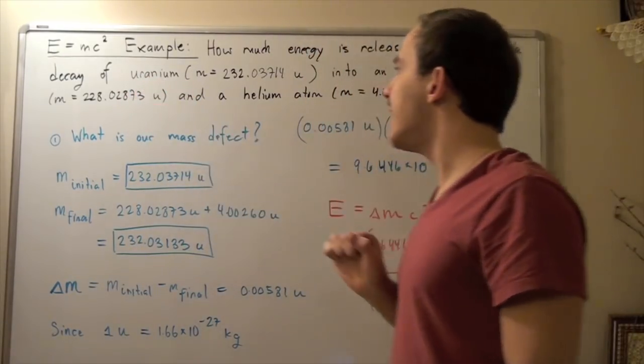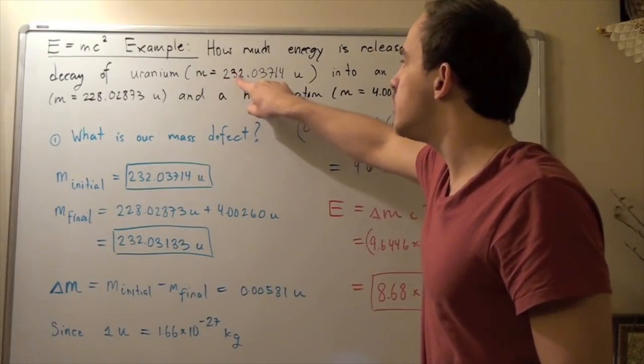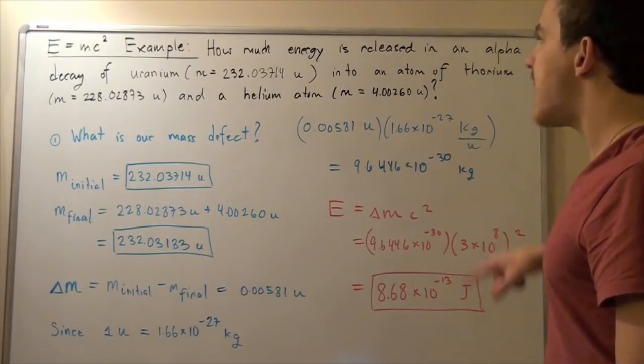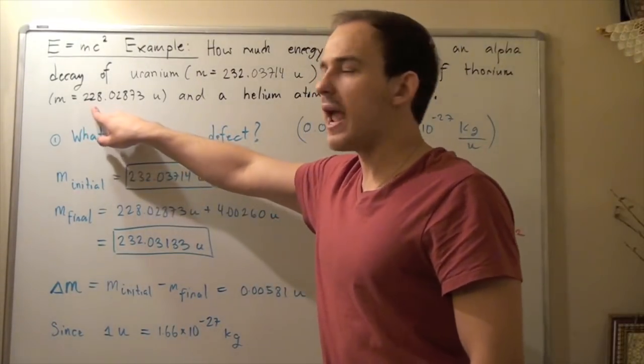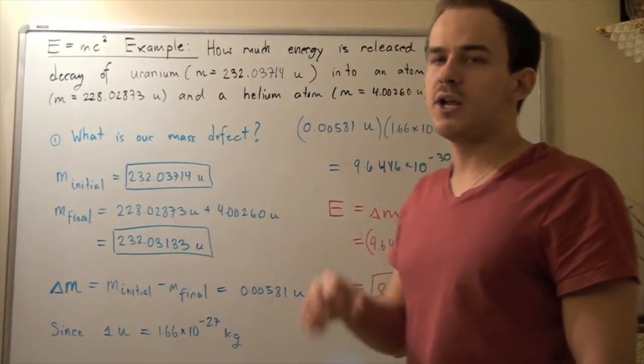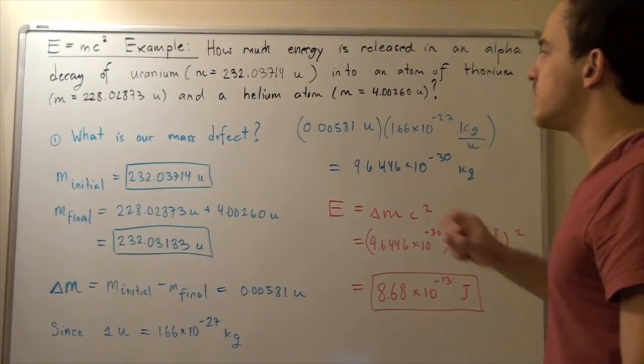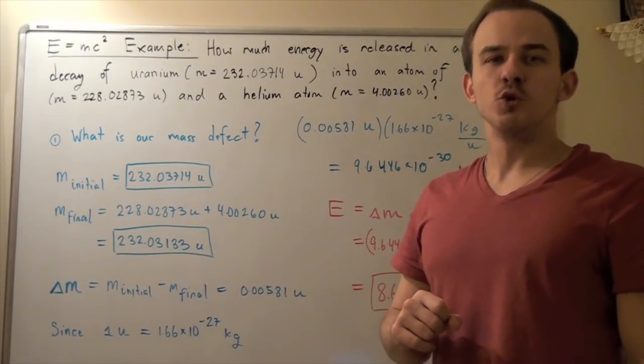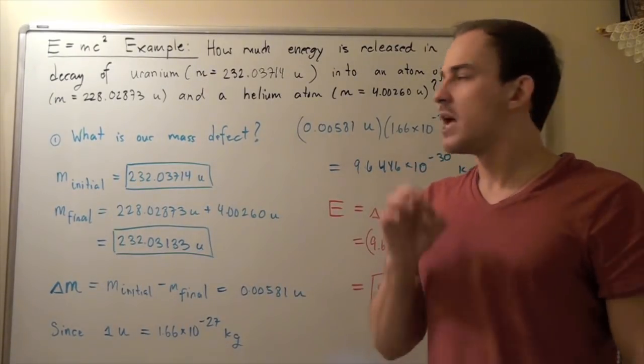The mass of uranium is given as 232.03714 unified atomic mass units, the mass of thorium is 228.02873 unified atomic mass units, and the mass of helium is 4.00260 unified atomic mass units.